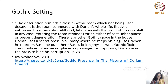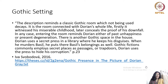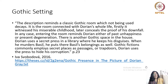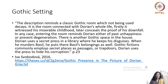Gothic fiction, as we understand, uses specific architectural attributes such as secret passages, hidden passages, secret notes, niches, and trapdoors. Dorian uses the hidden space in the library for his purposes — for his degenerate behavior, for his corruption.